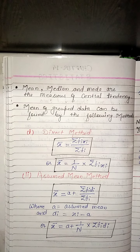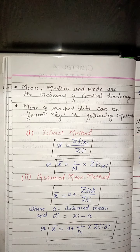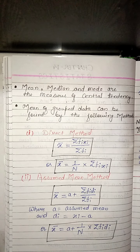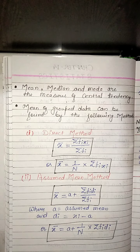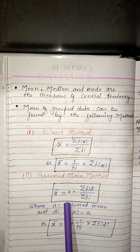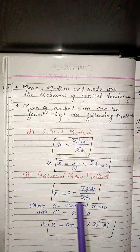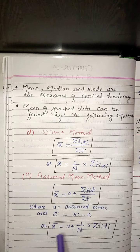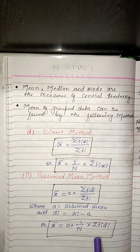The second method is the assumed mean method. In this method, when the values of fi × xi are large and calculations become tedious, the assumed mean method is used. First, one value among xi is chosen as the assumed mean, denoted by a. Then the deviation di = xi − a is calculated for each xi. The formula is: x̄ = a + Σ(fi × di) / Σfi, where di = xi − a. Equivalently, x̄ = a + (1/n) × Σ(fi × di).